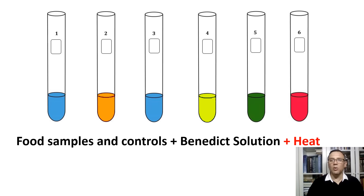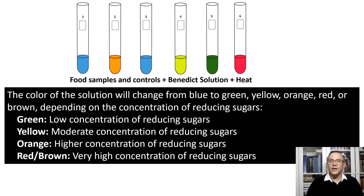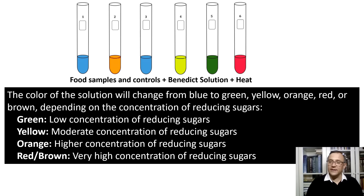After the water bath, we will examine the solutions for the presence of precipitates. The colors red, brown, yellow, and green indicate their presence. The extent of the color change from blue to green, yellow, orange, or red indicates the concentration of the reducing sugar. A small amount of reducing sugar will produce a green color. A moderate amount will produce a yellow color. A large amount will result in an orange, red, or brown color. Thus, the presence of colored precipitate indicates that reducing sugars are present in the sample, and the intensity of the color change corresponds to the amount of reducing sugar.